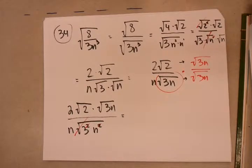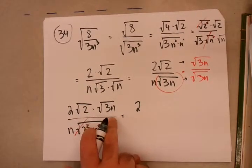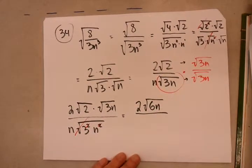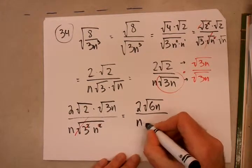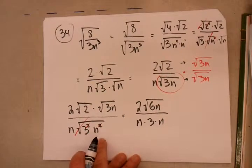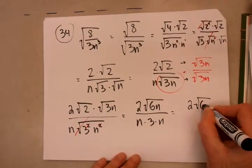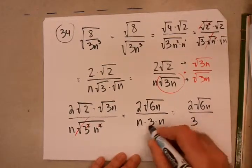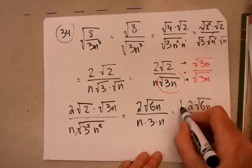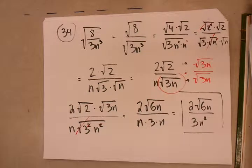So, now, I can cancel out the powers of 2 with their square root. They're free to go. In the numerator, I'm going to get the 2, which is still on the outside, then 2 times 3, that's 6. So, root 6n. In the denominator, I'm going to get n times 3 times n, because these are now free. If I were to fully simplify this, I would get 3n squared. So, that is my full answer to problem number 34.